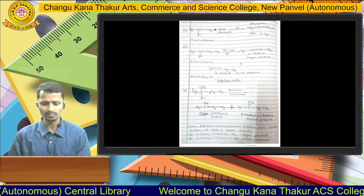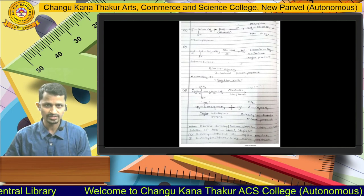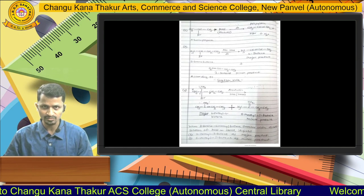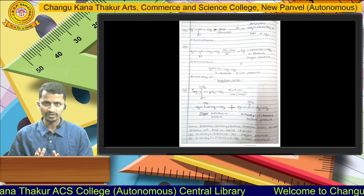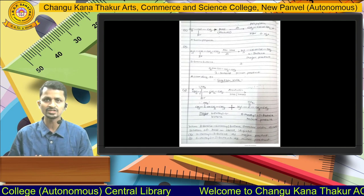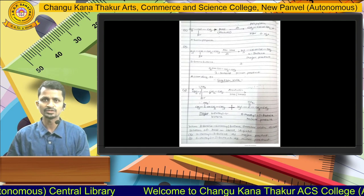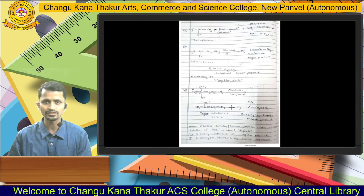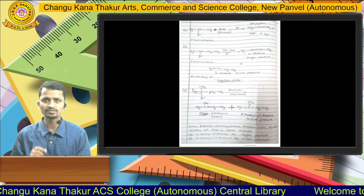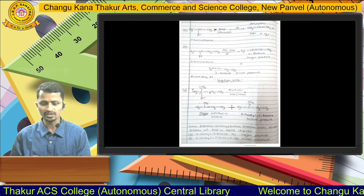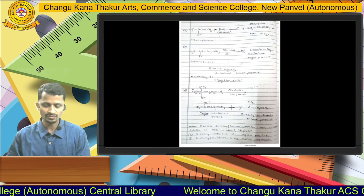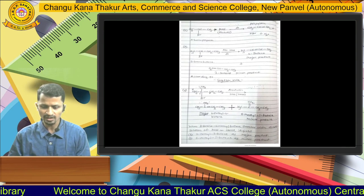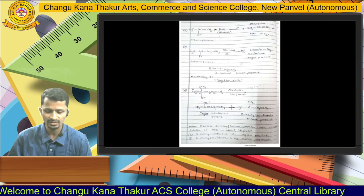Another example: 2-bromobutane, where two beta carbon atoms are present — one containing 2 hydrogen atoms and the other containing 3 hydrogen atoms. According to the Saytzeff rule, hydrogen should be eliminated from the carbon atom with fewer hydrogens — the right-side carbon with 2 hydrogens. So 2-bromobutane reacted with alcoholic KOH gives 2-butene as the major product and 1-butene as the minor product.